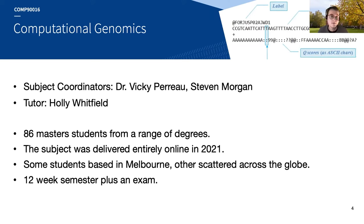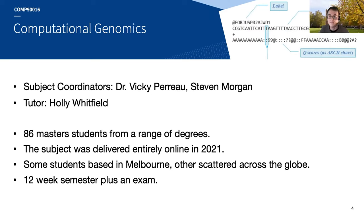Last semester — the first half of this year — we had 86 very bright students, and that number seems to be increasing over time. The subject was delivered entirely online in 2021, so it's probably a little different to some university experiences. Most of our students were based in Melbourne but others were scattered all across the globe, including quite a few from mainland China and other time zones. We ran a standard 12-week semester plus an end-of-semester exam.